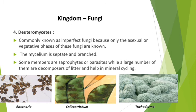Examples of Deuteromycetes include Alternaria, Colletotrichum, and Trichoderma. Pictures show how they appear in masses and under the microscope. Today we have learned about four classes of fungi: number one Phycomycetes, number two Ascomycetes, number three Basidiomycetes, and number four Deuteromycetes.